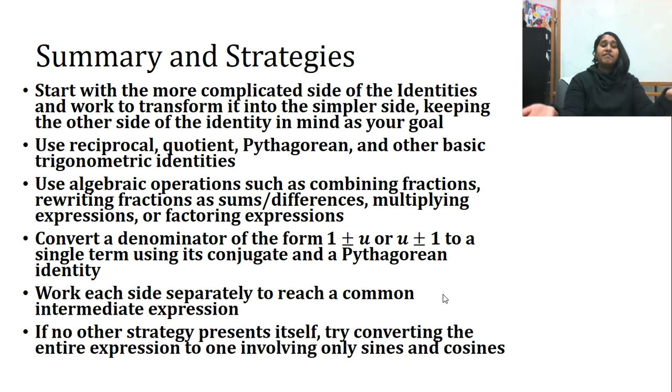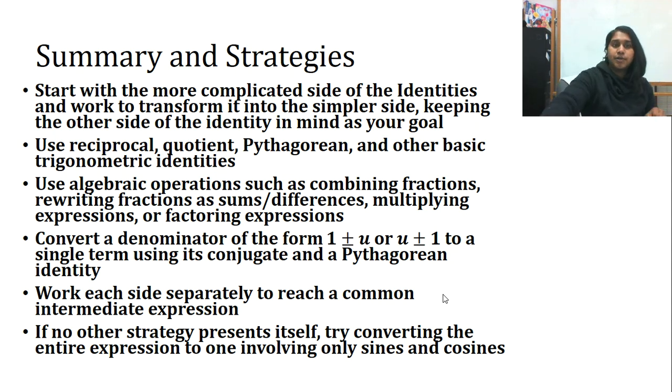And then finally, my failsafe - worst case scenario, turn everything into sines and cosines. Tangent, cotangent, use their quotient identity. Secant, cosecant, use the reciprocal identity. So these are the kinds of things that you're about to see.